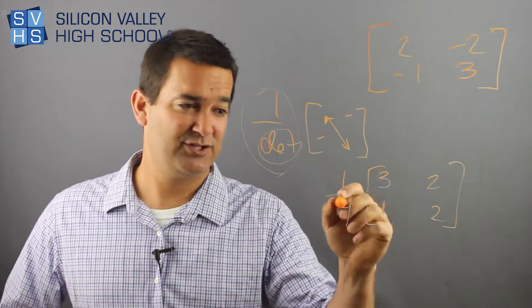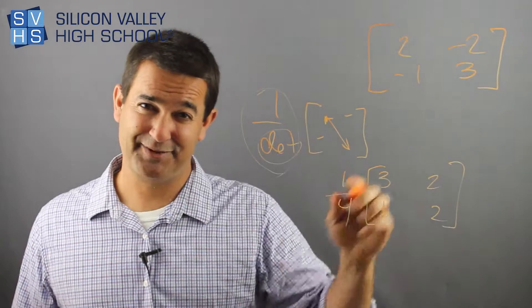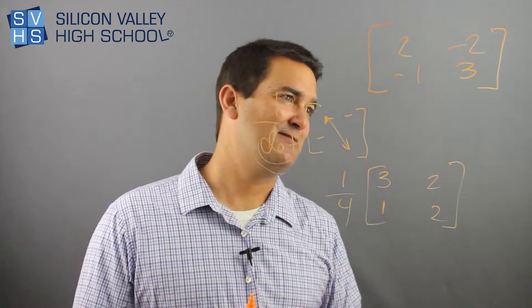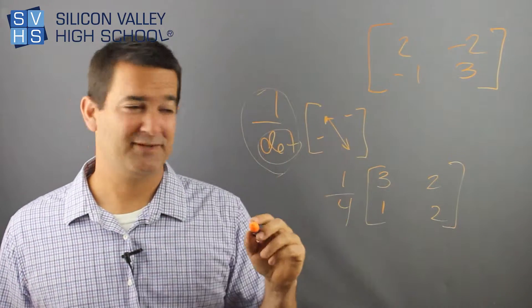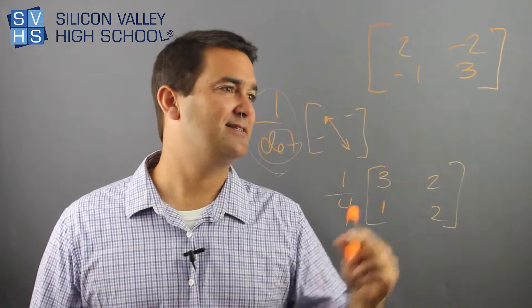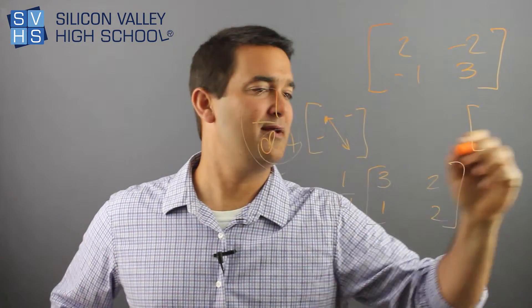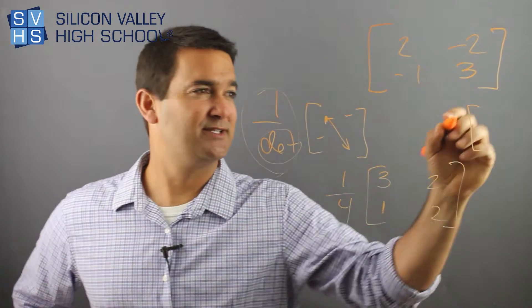Now I actually have to distribute the 1 over 4 to every single guy, right? So my main thing is finding room on this little screen. But so now let's actually do it right here. Okay, I go 1 over 4 times 3. That's 3 over 4.